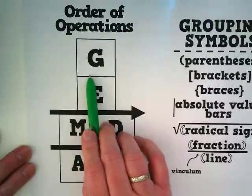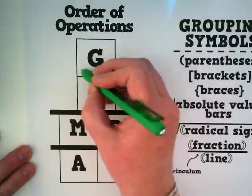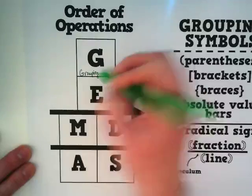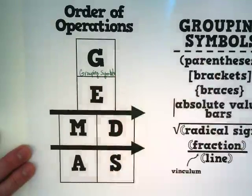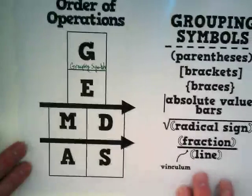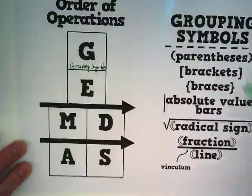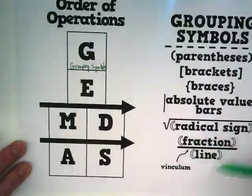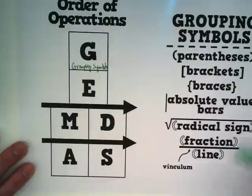Okay, so what is our G standing for? Grouping symbols. And as we discussed yesterday, those grouping symbols include all of these things here: parentheses, brackets, braces, absolute value bars, radical sign, fraction line. And we will be working with a lot of these today as we solve a couple problems.